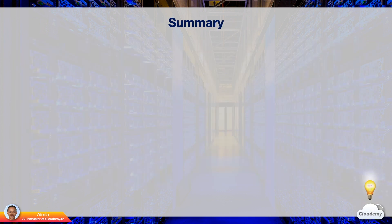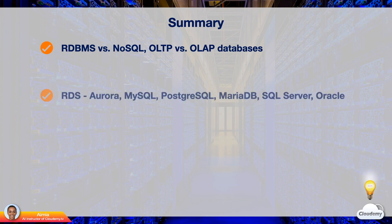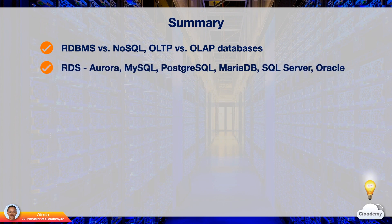In this episode, we've learned the basic concepts of databases and AWS database services. We've learned the difference between RDBMS and NoSQL databases, as well as OLTP and OLAP. Amazon offers several database technologies. Amazon RDS is the relational database service, offering Aurora, MySQL, PostgreSQL, MariaDB, Microsoft SQL Server, and Oracle database engines.